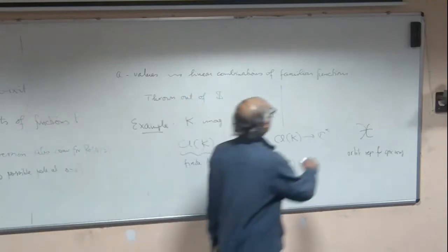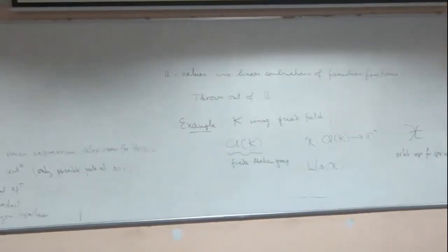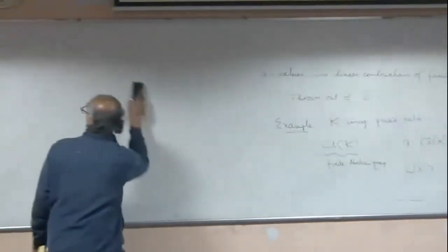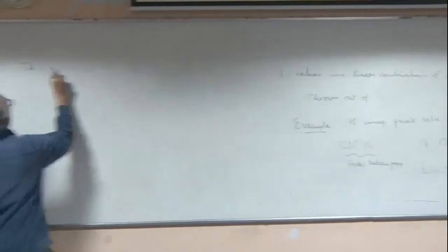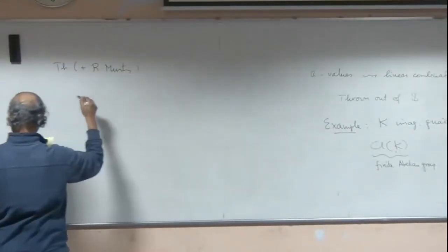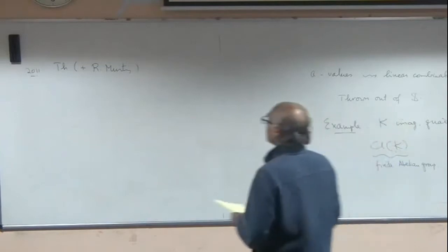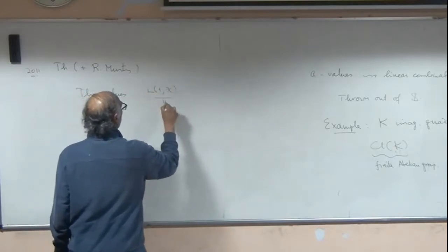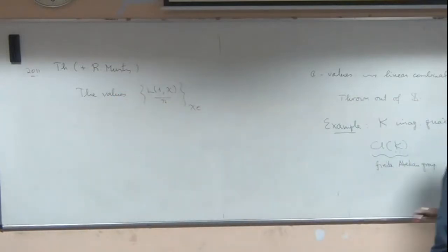And then here is a result. This is a result from 2011, years ago. What it says is that the values L(1, chi)/L(1, chi-bar) as chi varies over these representatives are linearly independent over Q.